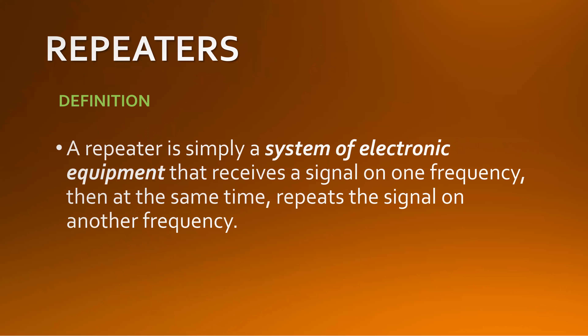To start off — there was a movie called Brewster's Millions. Richard Pryor inherited a bunch of money, and there's a guy who would follow him and repeat everything he said. That's the best definition of a repeater I know of. As far as ham radio goes, a repeater is a system of electronic equipment that receives a signal on one frequency and at the same time transmits — or repeats — the signal on another frequency.